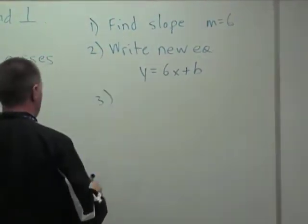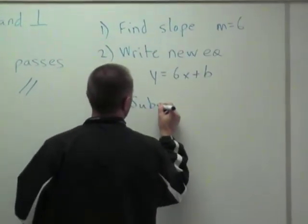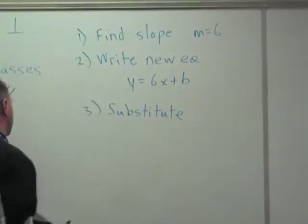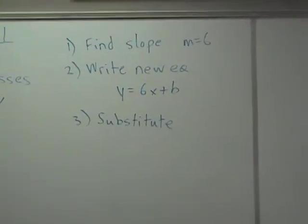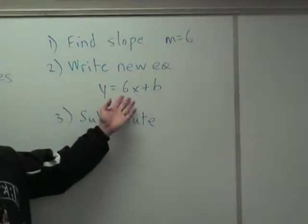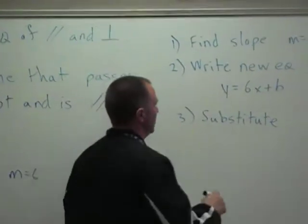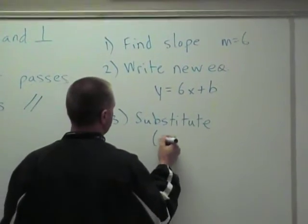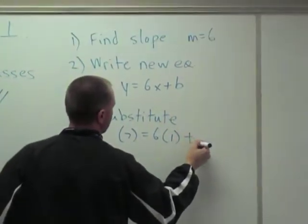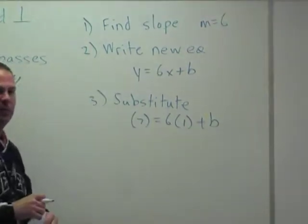Step 3, substitute. You can't find b unless you know x and y. Well, they gave you the x and y. This point is on this new line. So that's your x and y. So y is 7, x is 1, and now you can solve for b.